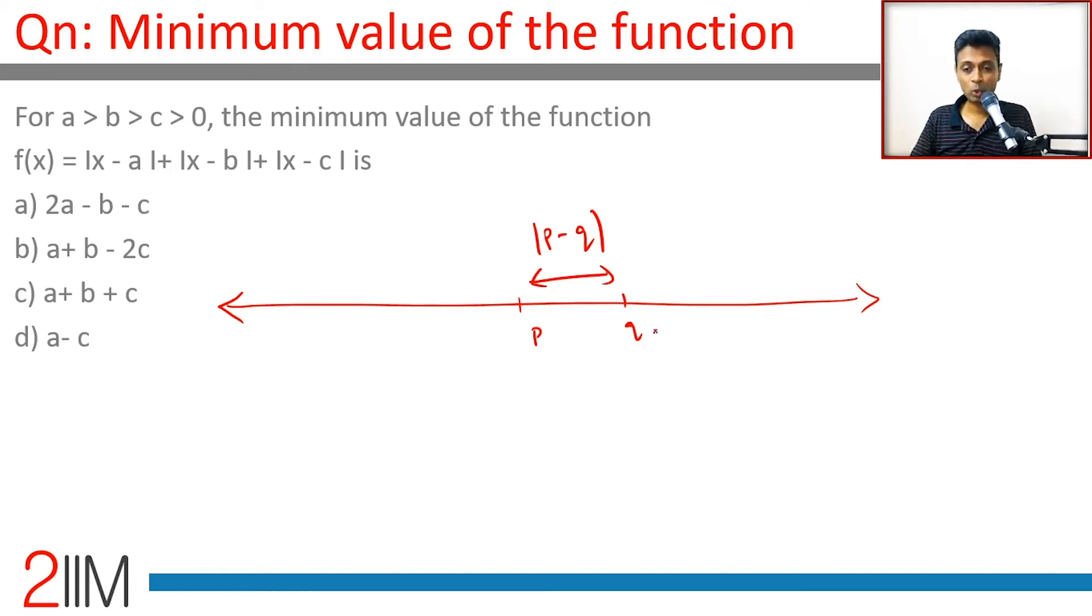c, so if you have c here, b here, a here, that's what we're looking at: a > b > c. That's what the diagram should look like.